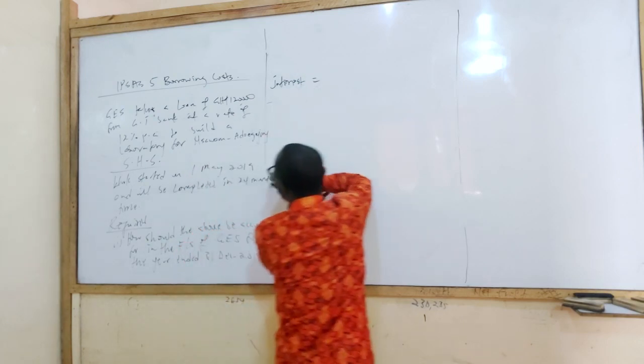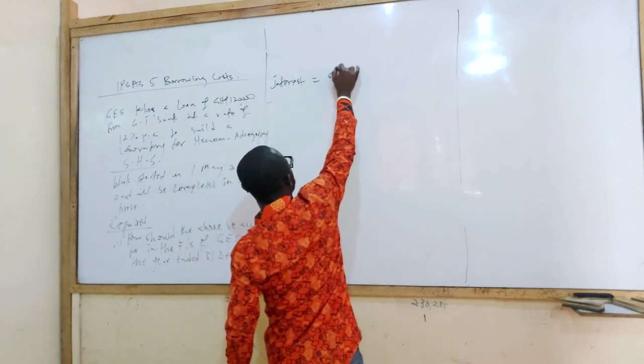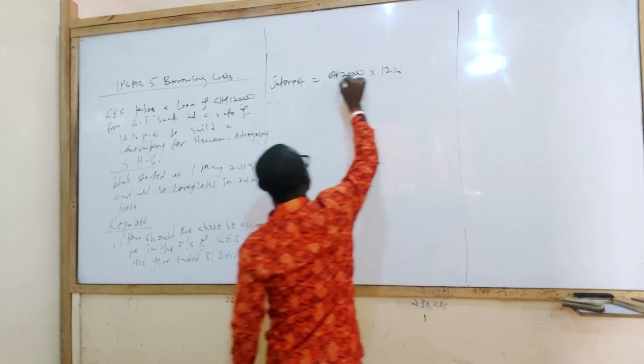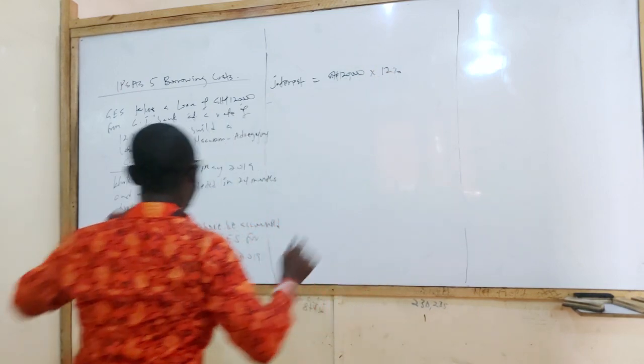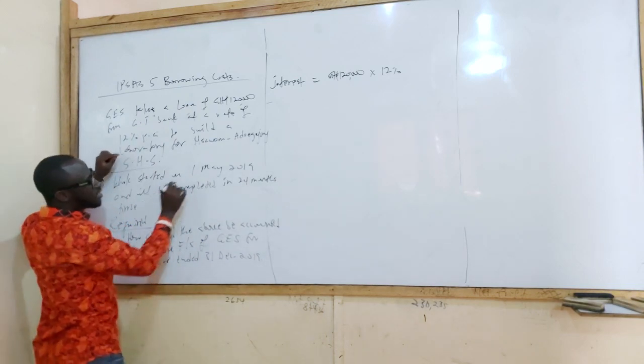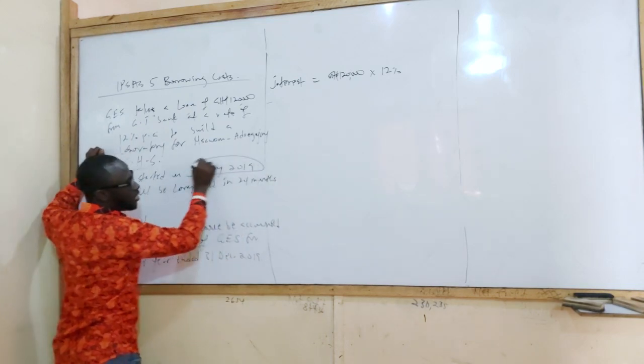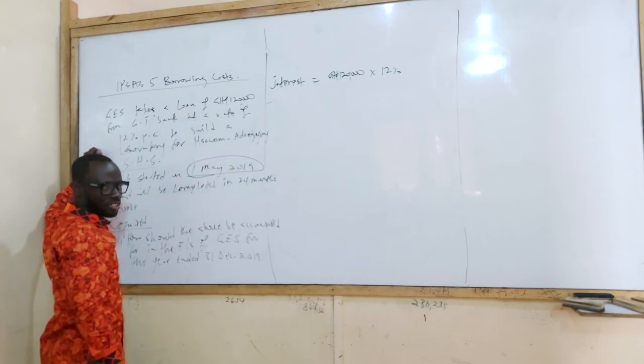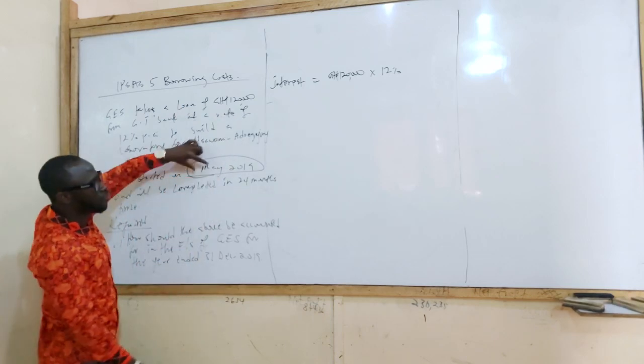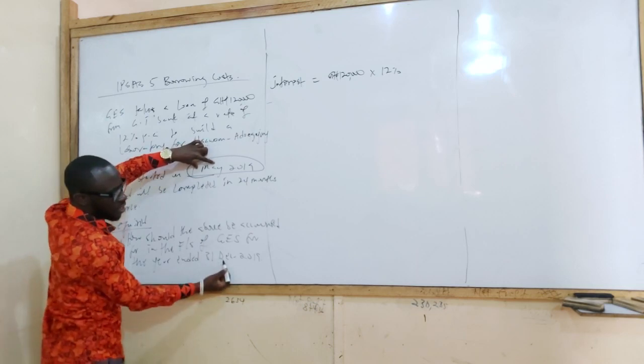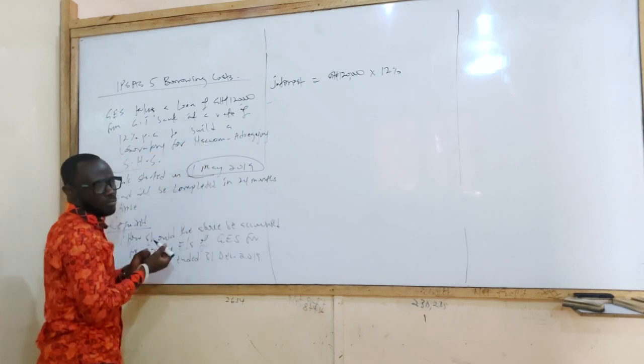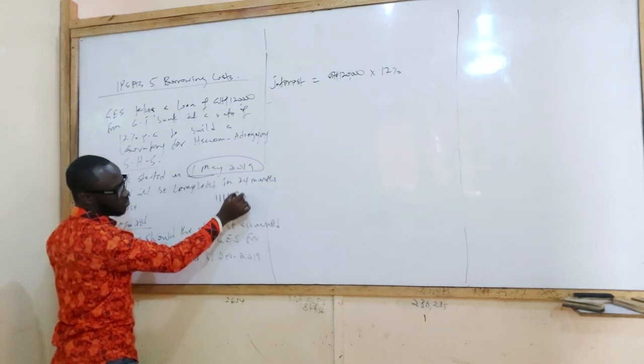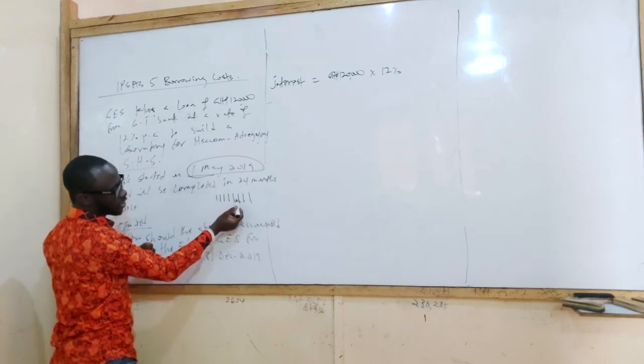What do we have? 120,000 Ghana cedis times 12%. But remember, the work started on 1st May 2019. So you cannot charge a full year interest. Does it make sense? So from 1st May 2019 to 31st December 2019, how many months? May, June, July, August, September, October, November, December.